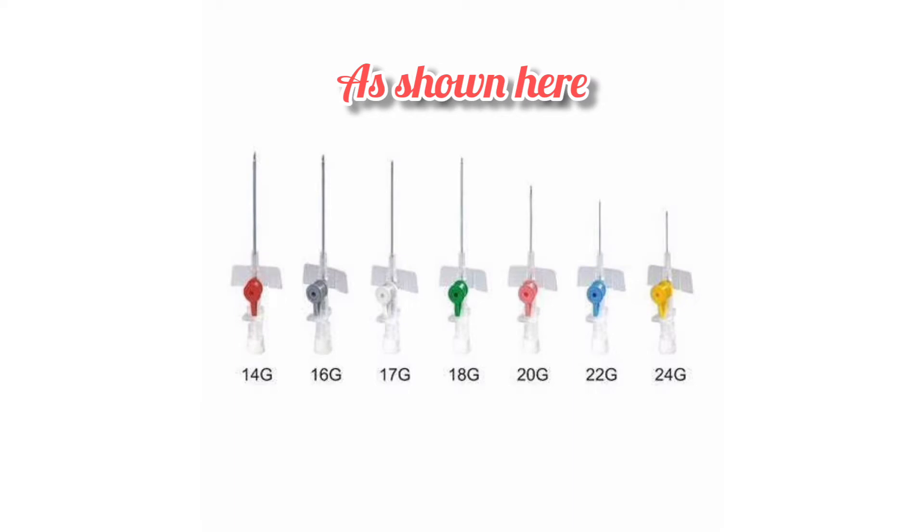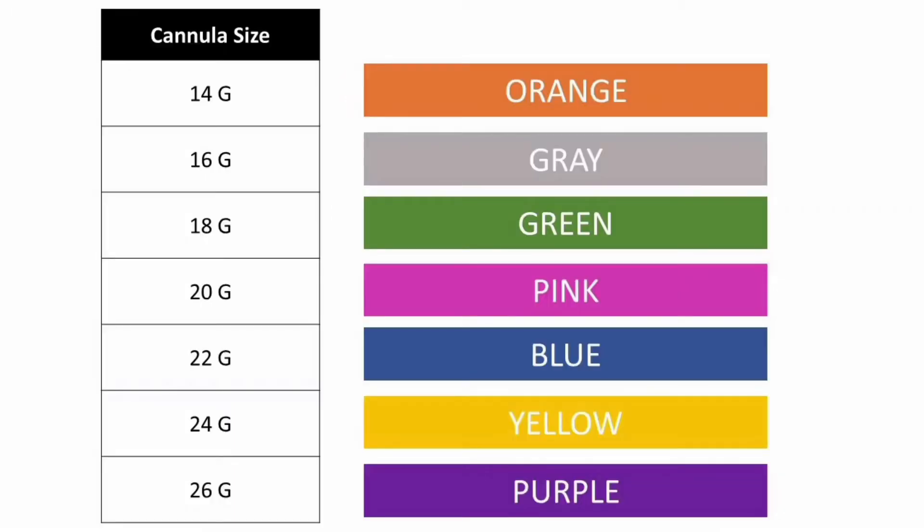We have different types of cannulas ranging from 14 gauge to 26 gauge. I will show you a picture at the end which will help you remember the colors of the cannula along with their gauges.